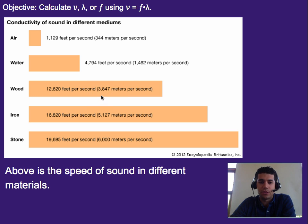In wood, it's about 3,800 meters per second. Iron, about 5,100 meters per second. And in stone, 6,000 meters per second. So we can see that depending on what material the sound is traveling through, it will actually go faster or slower. And in fact, it moves pretty slow in air in comparison.